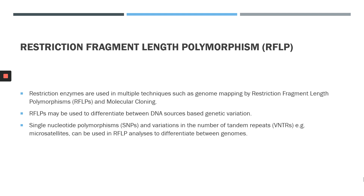RFLPs are used to differentiate between DNA sources, and this is based on genetic variation between the sources of DNA. Some forms of genetic variation used in RFLP analyses include single nucleotide polymorphisms or SNPs, and variable number tandem repeats. These are like your microsatellite sequences which have a variable number of repeats in the genome, and the length of these VNTRs can be used to differentiate between genomes. For this lecture, we'll be focusing on how SNPs are used in RFLP analyses.